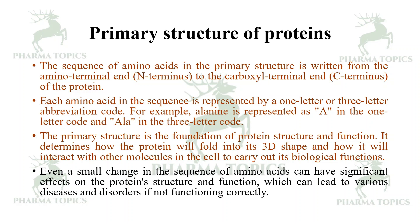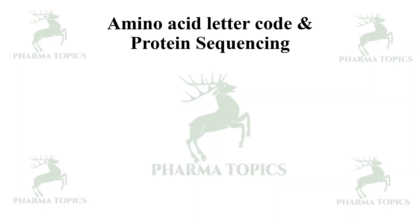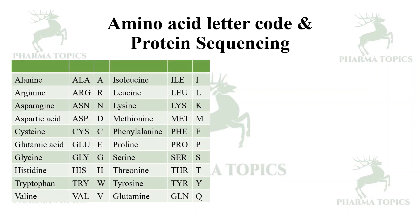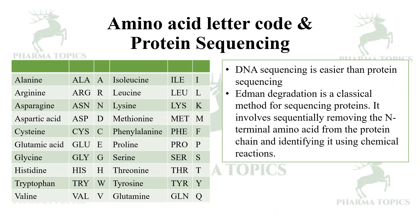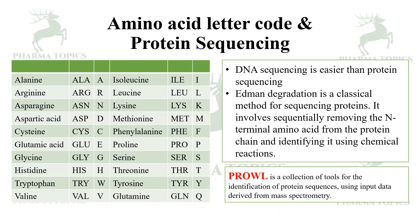Looking at the amino acid letter codes: alanine is Ala / A; arginine is Arg / R; asparagine is Asn / N; aspartic acid is Asp / D; cysteine is Cys / C; tyrosine is Tyr / Y; glutamine is Gln / Q — and so on for all 20 amino acids. For protein sequencing, Edman degradation is a classical method — it involves sequentially removing the N-terminal amino acid and identifying it using chemical reactions. PROWL is a collection of tools for protein sequence identification using mass spectrometry data.